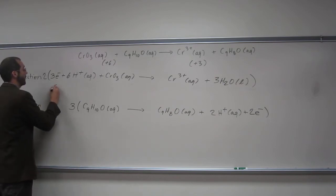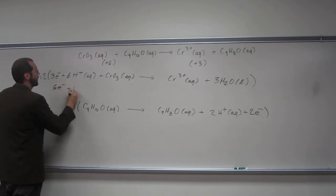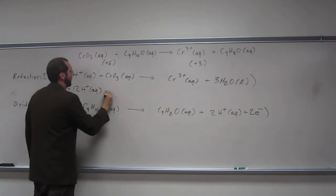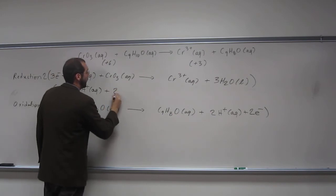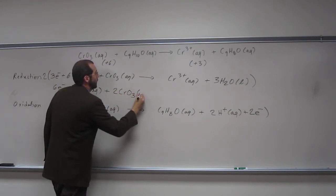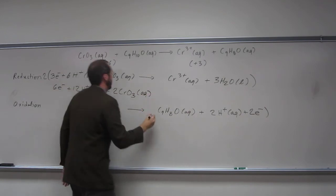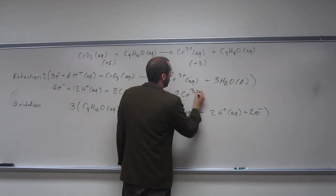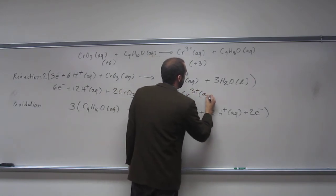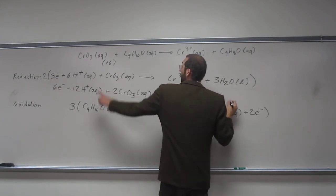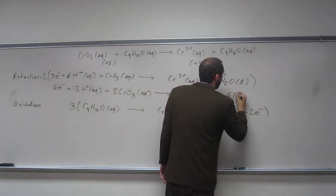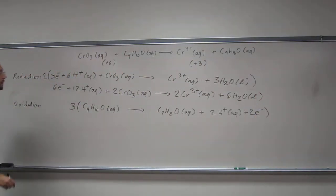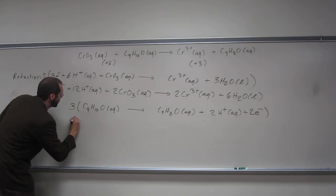Let's write it out. Six electrons plus 12 protons, or hydrogen ions, plus two chromium oxides goes to two chromium 3+ ions plus six H2O.